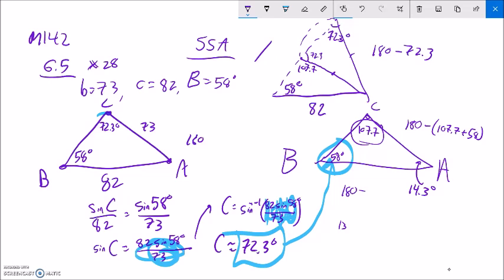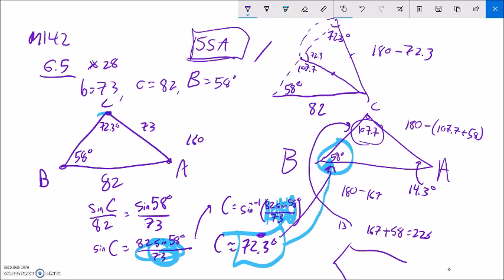Would be 167. And if I go 167 plus 58, that's going to be bigger than 180, that's 225. And in that case, those angles would be going away from each other, they wouldn't be able to close back up. So as long as this angle that you got is greater than that angle right there, you're in good shape and you'll get a second triangle in this SSA case. I hope that helps.